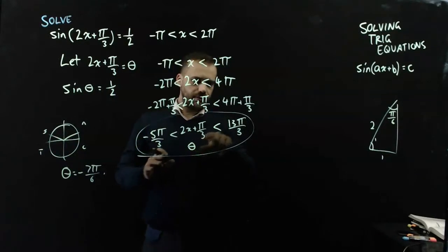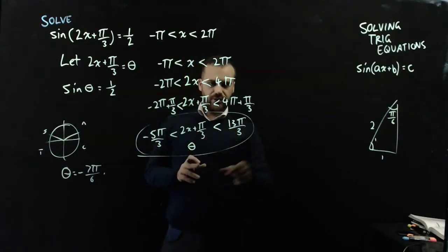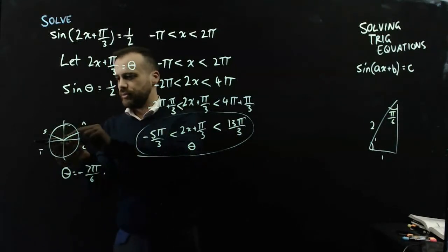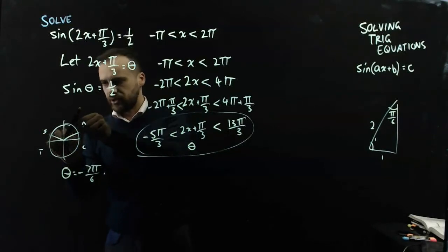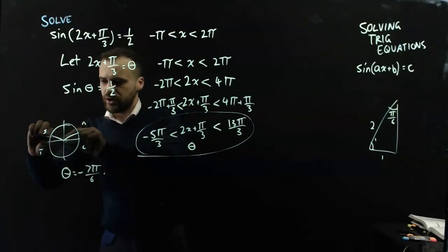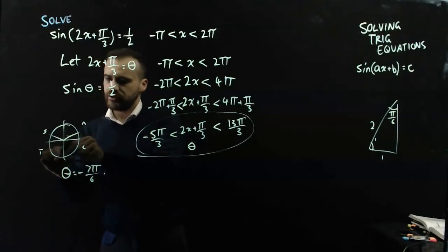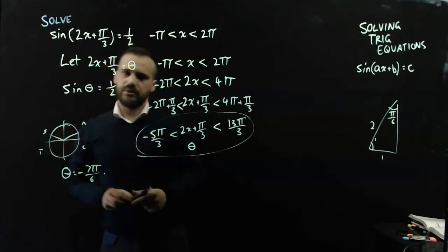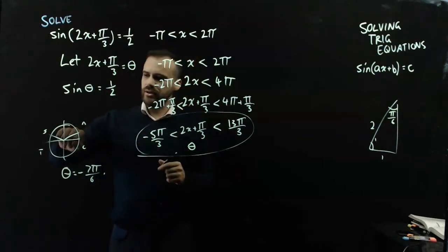Now, my positive answer, 13pi on 3. Alright, so let's think here. Pi on 3, 2pi on 3, 3pi on 3, 4pi on 3, 5pi on 3, 6pi on 3, 7pi on 3, 8pi on 3, 9pi on 3, 10pi on 3, 11pi on 3, 12pi on 3, 13pi on 3. Alright, so I've got to go around once.